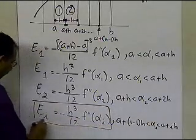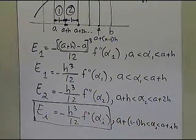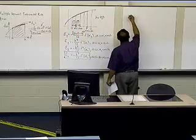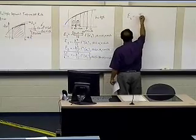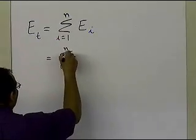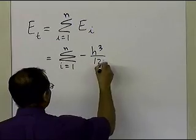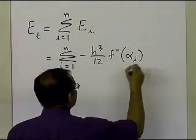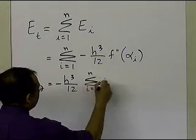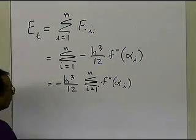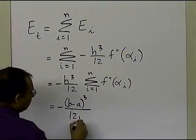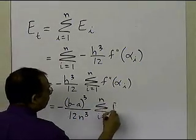This is the general formula for the true error in a particular segment. If I add all these errors for all the segments, that gives me the true error for the whole multiple segment trapezoidal rule. So the total true error equals the summation of e sub i from i equals 1 to n. Substituting the formula for e sub i, that's minus h cubed divided by 12 times f double prime of alpha i. Taking minus h cubed divided by 12 outside, I get summation i equals 1 to n of f double prime of alpha i. Since h equals b minus a divided by n, it becomes minus b minus a cubed divided by 12 n cubed, times summation i equals 1 to n of f double prime of alpha i.